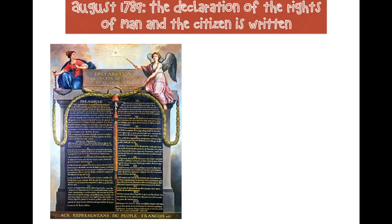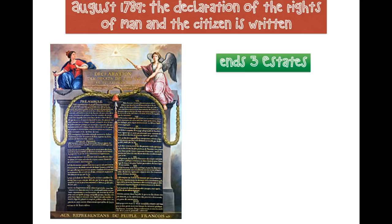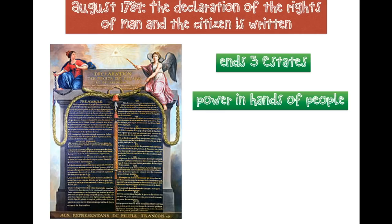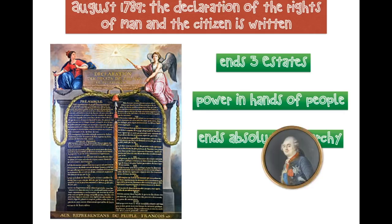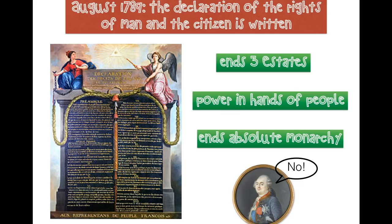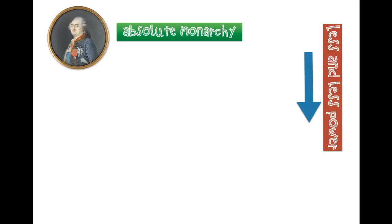After the Bastille, the National Assembly has a little bit of support behind it. They write a document called the Declaration of the Rights of Man in August of 1789. In the Declaration of the Rights of Man and Citizen, it basically ends those three estates. They say: we want France to be a classless society, we want power to be in the hands of the people, we want an end to the absolute monarchy, and we want to abolish all the old rules and privileges. Of course, Louis says no — he doesn't sign it. But these are the ideas that the French people want.